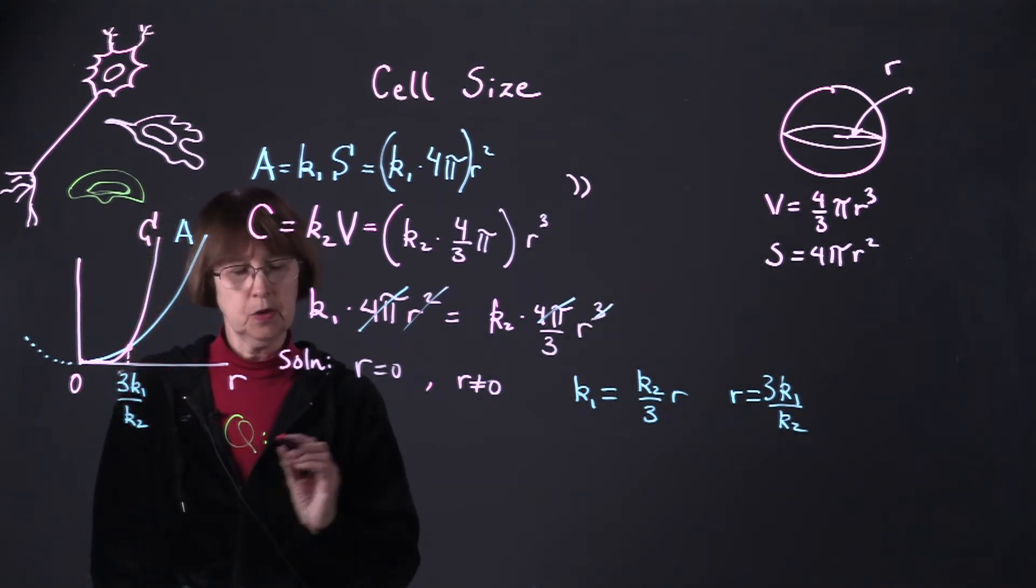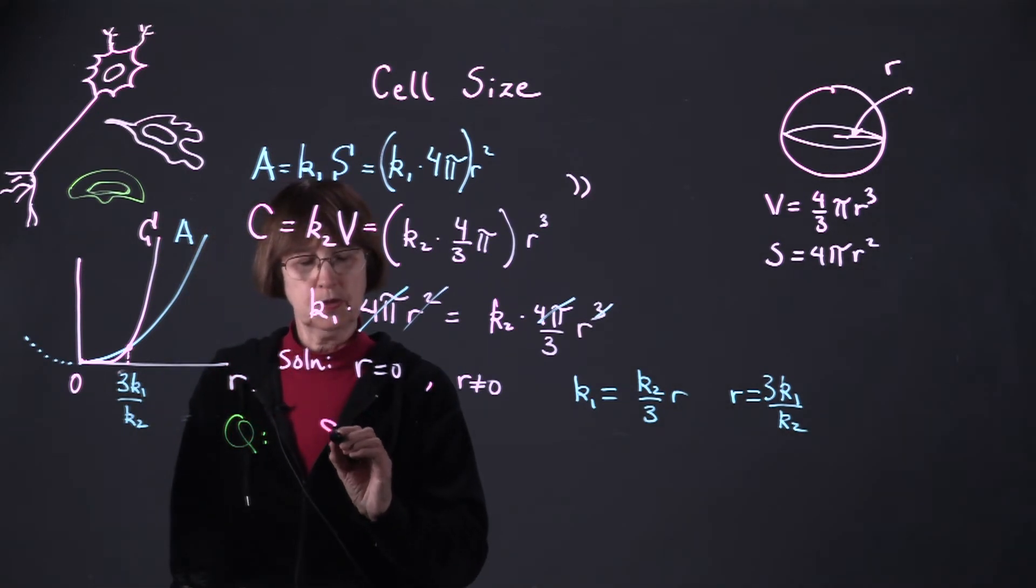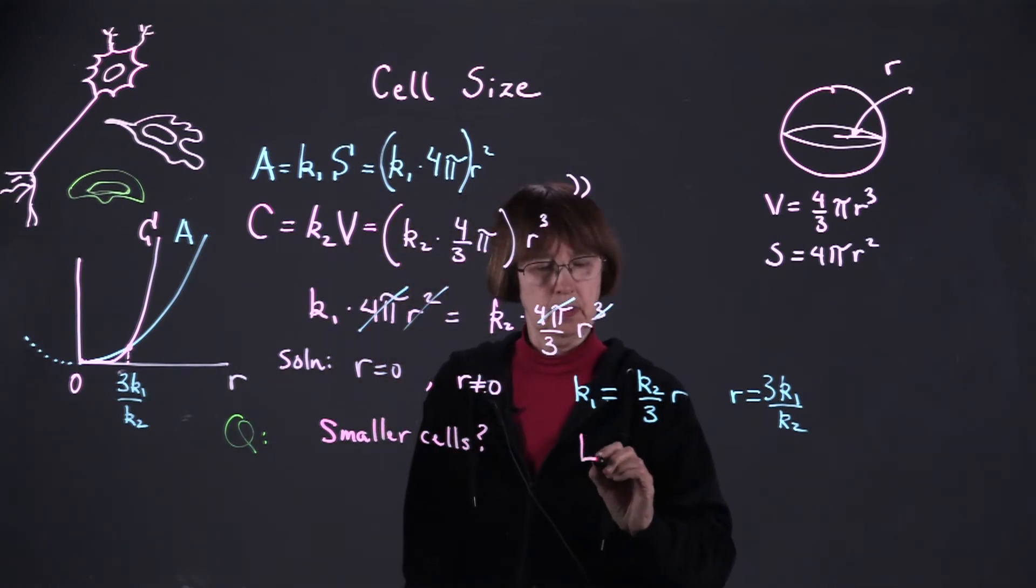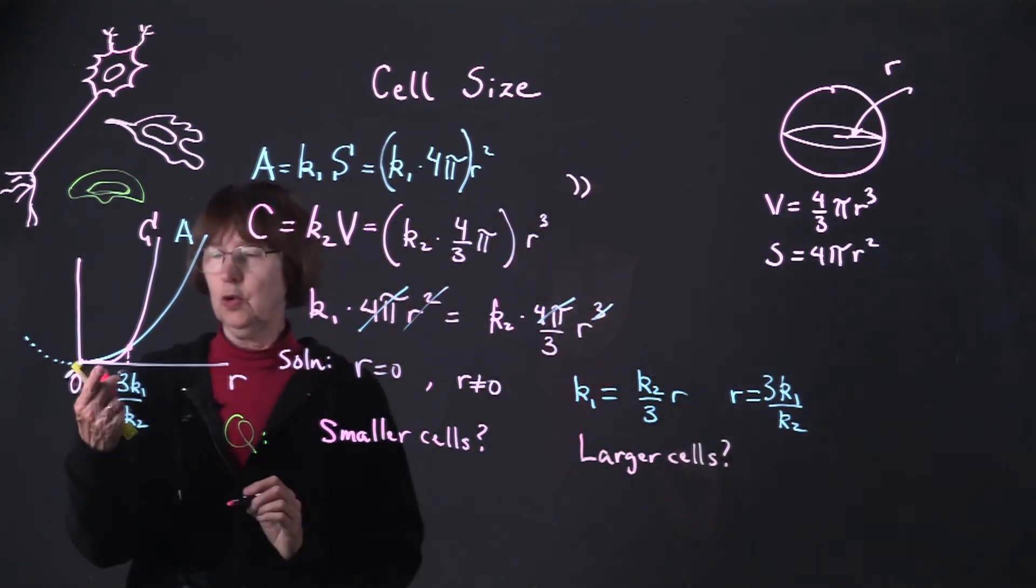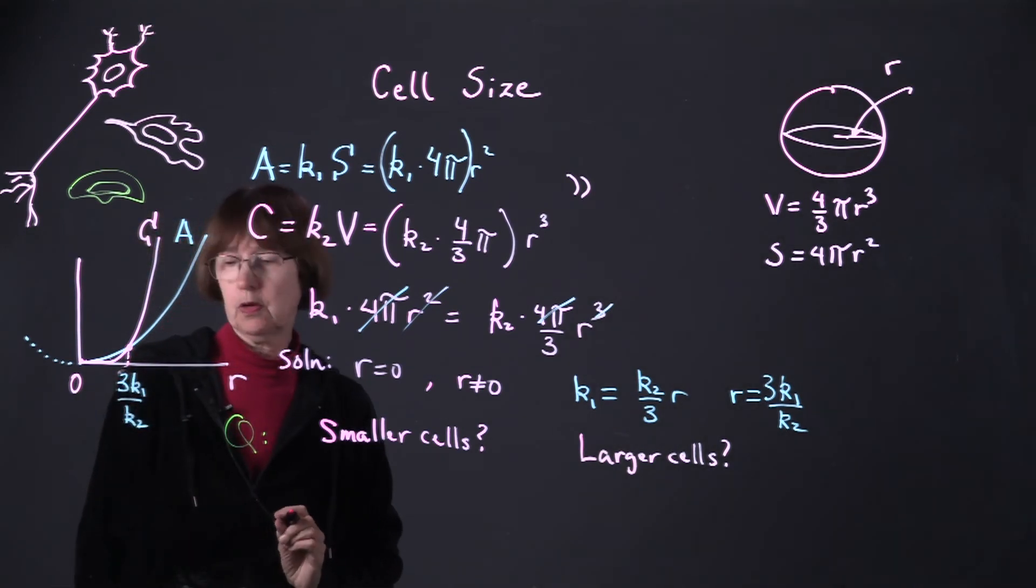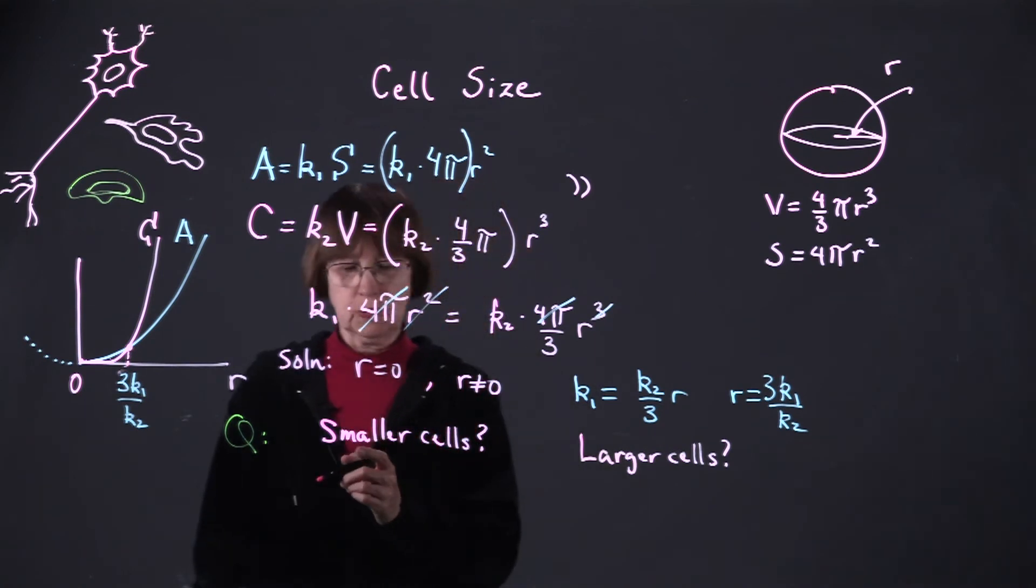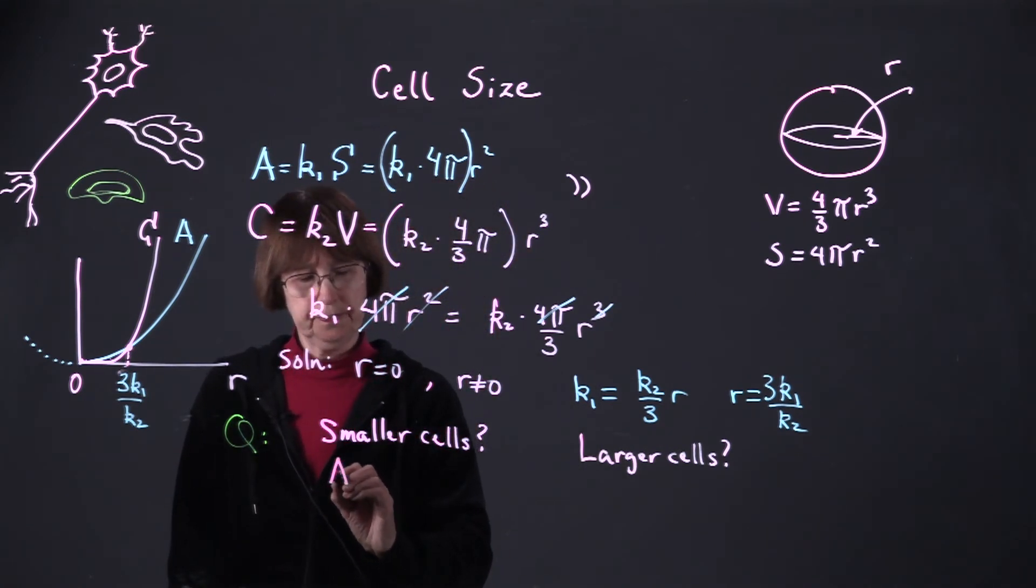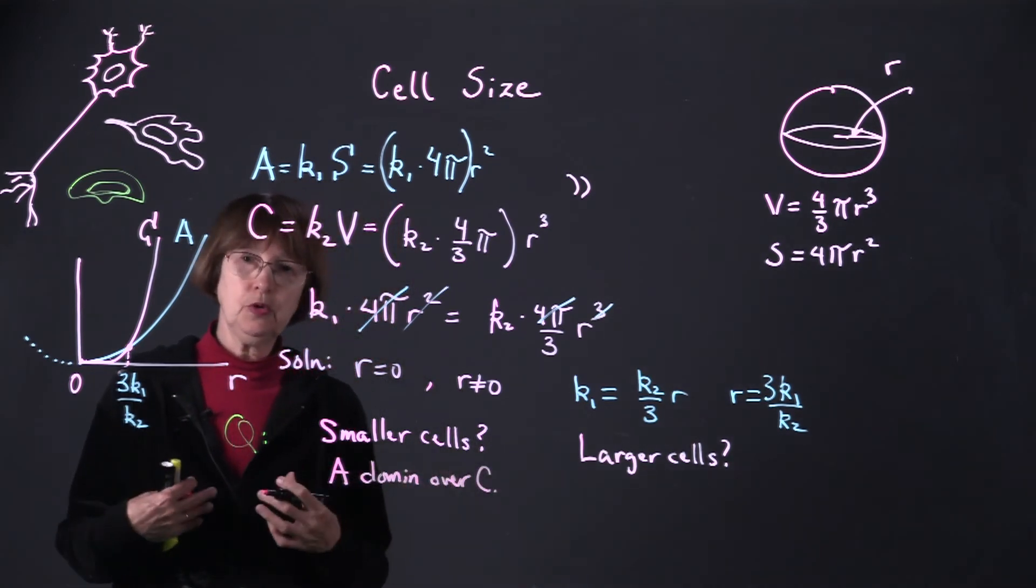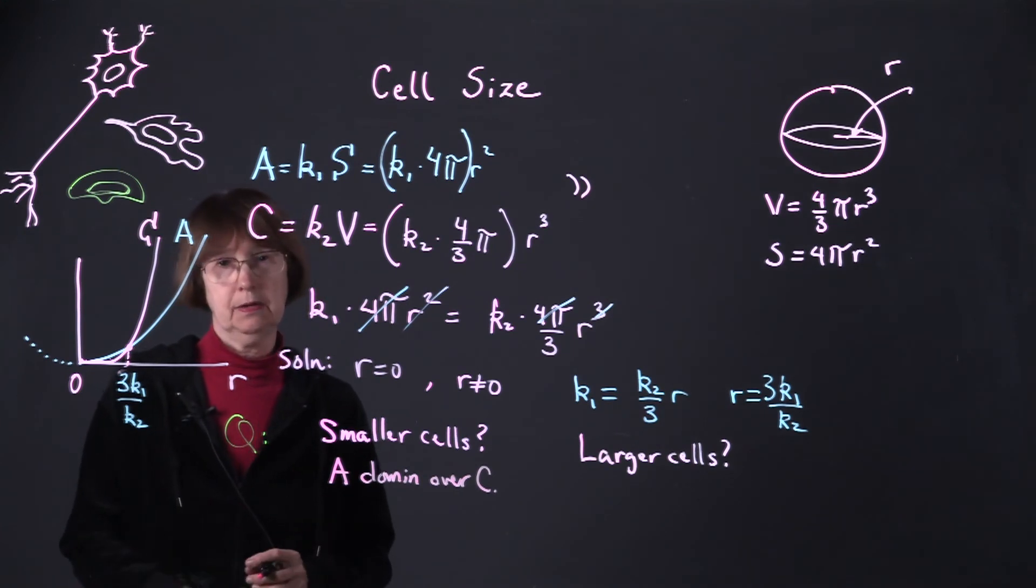So we've answered this question, and we've identified the point at which these curves intersect. It's 3k₁ over k₂. We can also answer a second question, which is what happens for smaller cells and what happens for larger cells. Looking at the diagram, we see that for smaller cells, the blue curve, which is the absorption rate, is higher than the pink curve, which is the consumption rate. Therefore, for smaller cells, absorption dominates over consumption. In other words, the cell can absorb nutrients faster than they consume them.